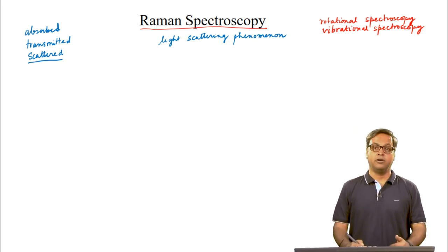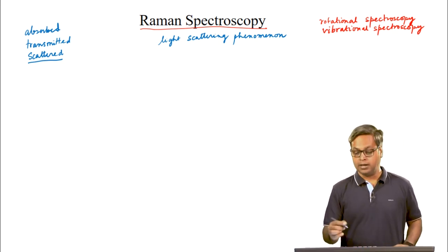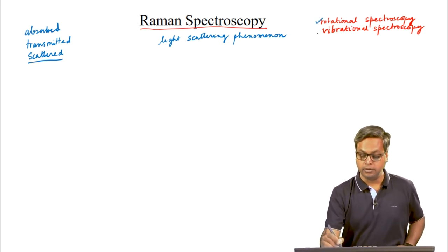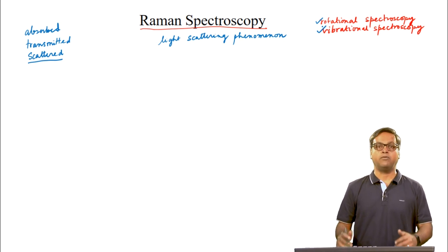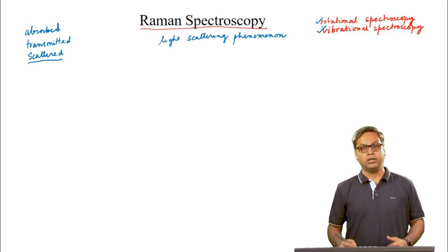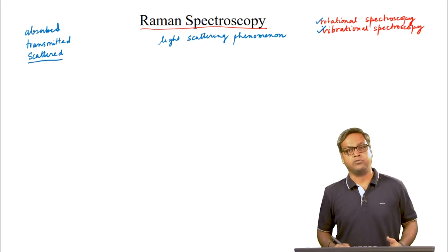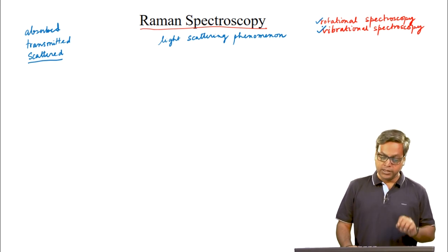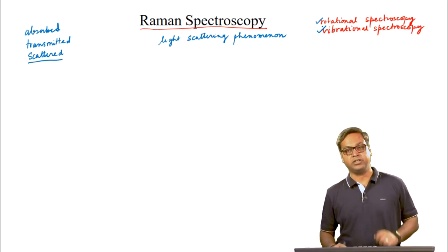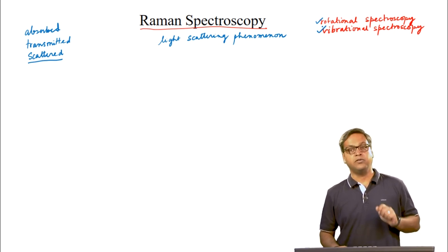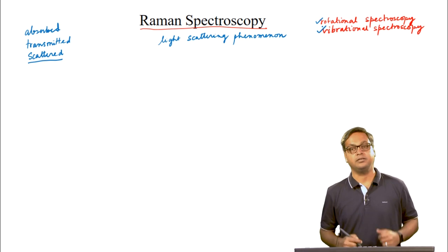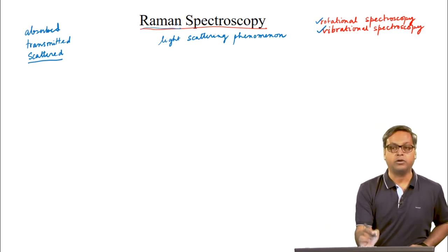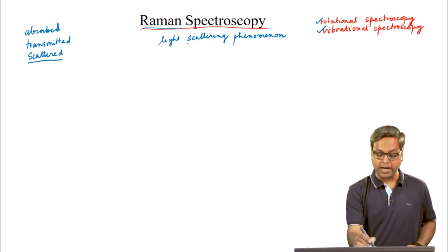In this respect, Raman spectroscopy is somewhat different in origin from other spectroscopic techniques like rotational spectroscopy and vibrational spectroscopy that we have already studied, or electronic spectroscopy which we will study in a later module. Those spectroscopies — rotational, vibrational, and electronic — involve absorption and emission of light. But Raman spectroscopy involves scattering of light.